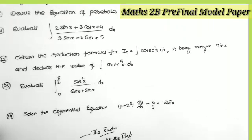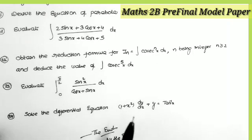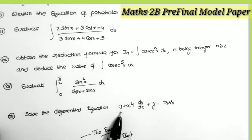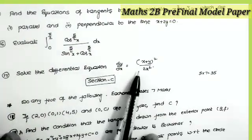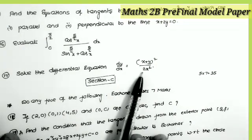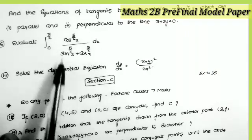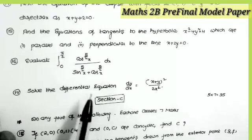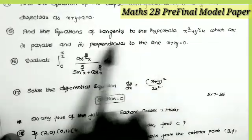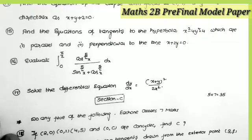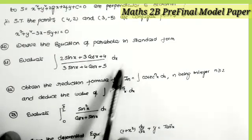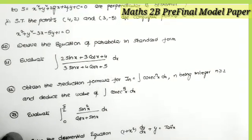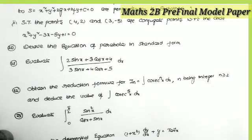The last seven-mark question is a linear differential equation, so all of you must prepare all linear DE models — definitely one question comes from it in Section C. The last four-mark question is on homogeneous differential equations, so prepare that method without leaving it. The hyperbola tangents question (parallel and perpendicular) is a very important four-mark model. The reduction formula is also most important. Prepare all these model questions thoroughly. All of you practice well — all the best!